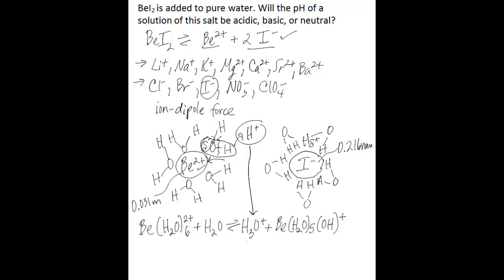And this is how small, highly charged metal cations create acidity. Here's the acidity, the hydronium cation is produced in solution due to the interaction of the beryllium cation with the water molecules.